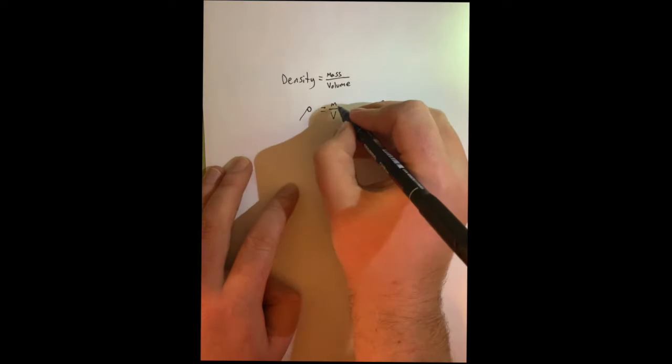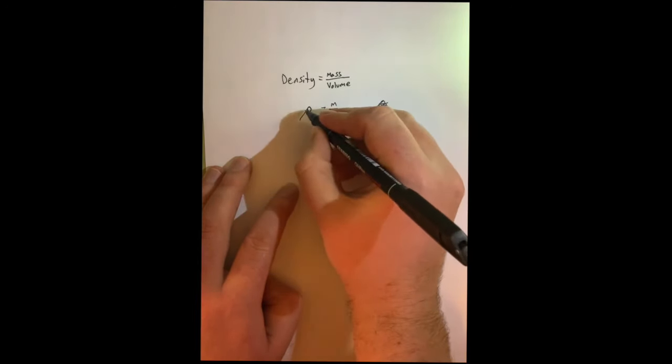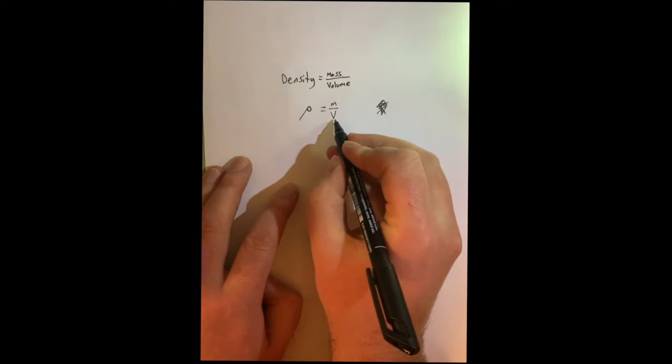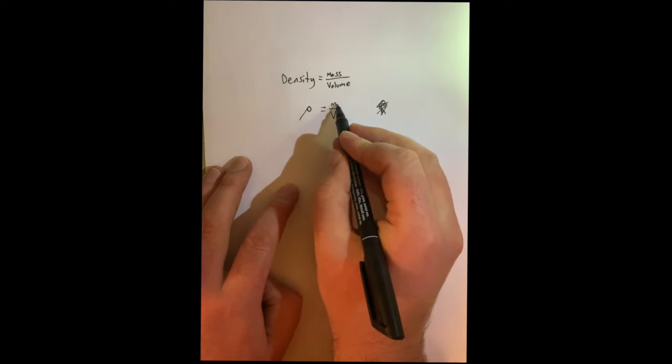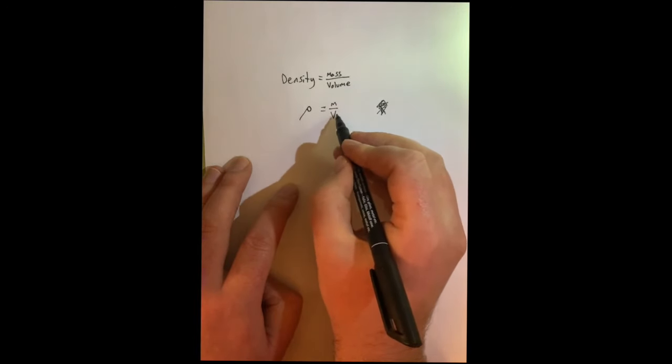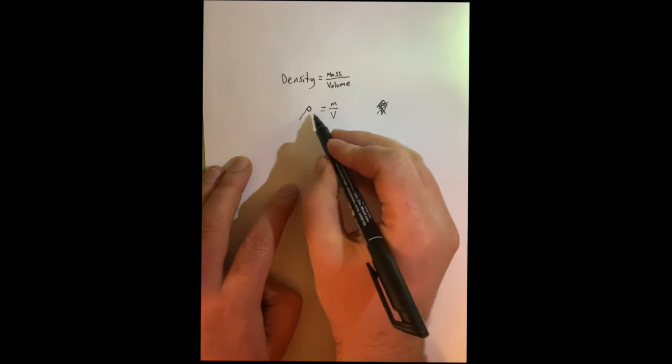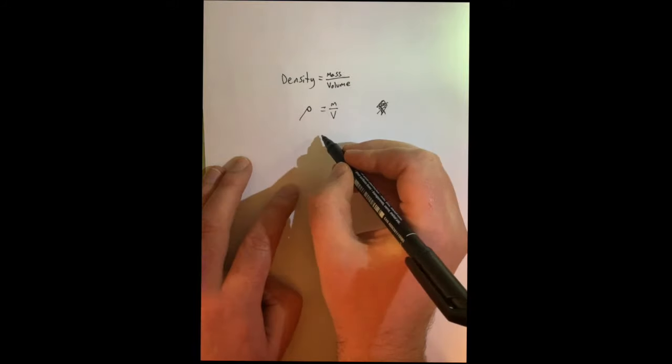Okay, so you can see with this, then, that if I've got a larger mass, I've got a larger density, and if I've got a larger volume, what that's going to do to this fraction is it's going to reduce it, it's going to make it smaller. Yeah, so if this was one and this was two, that'd be half. If this was one and this was four, it'd be a quarter, so it's going to be smaller. So the larger this value is, this volume, the smaller the density is going to be, if we keep the mass the same.